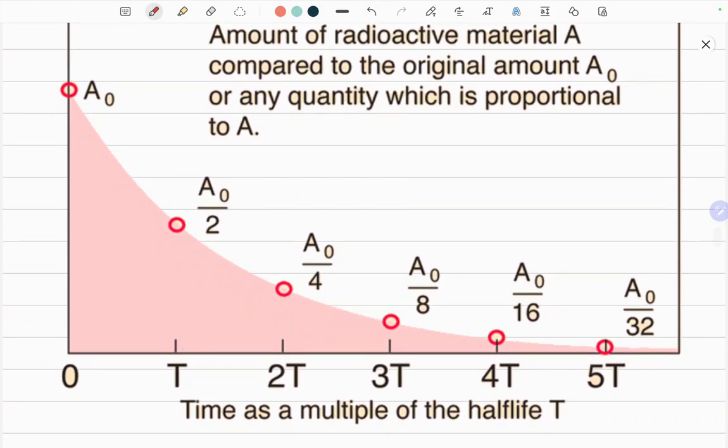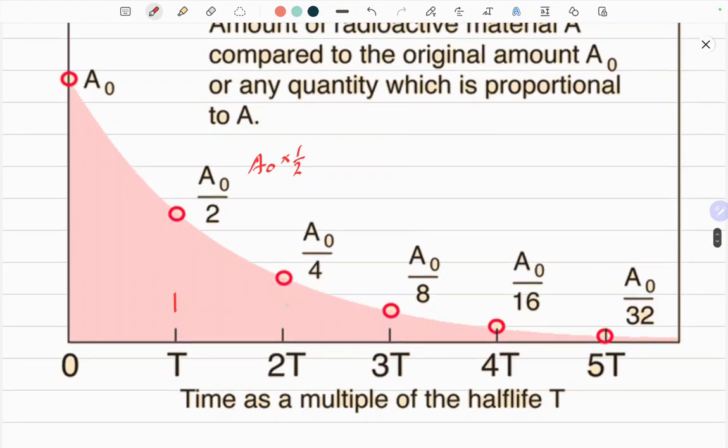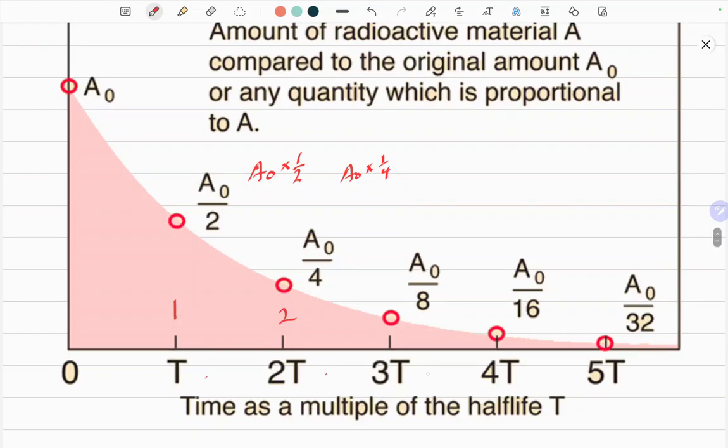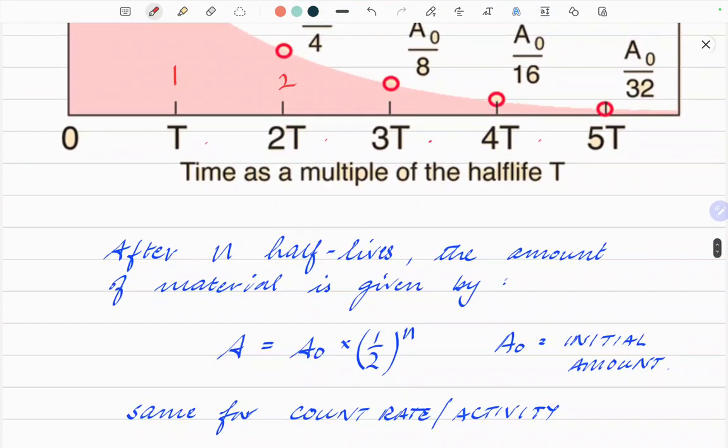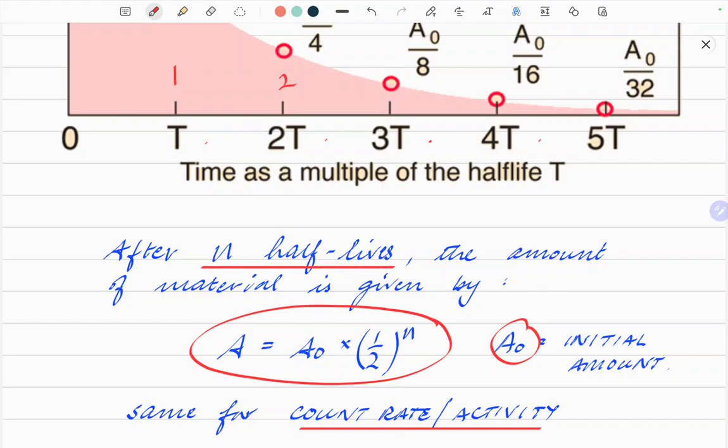After one half-life, you've got A-nought times a half. Two half-lives, you've got A-nought times a quarter, and so on. The formula for this, please take note, and remember, the times remain constant, the intervals remain constant. The amount you have or the activity rate, both of these things can be expressed by the same formula: the initial rate times a half to the power n. After n half-lives, it's A-nought times a half to the power n. That is really the crucial bit there.